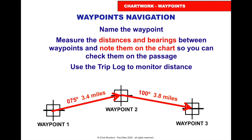You'd say: in a minute, please steer 100 degrees — we go on that for 3.8 miles — and they can do that straight onto the compass. But make it obvious on your passage plan or chart that that bearing is in compass.